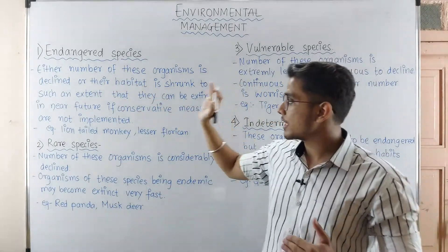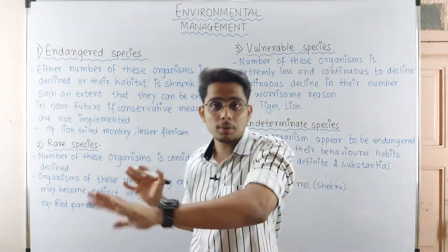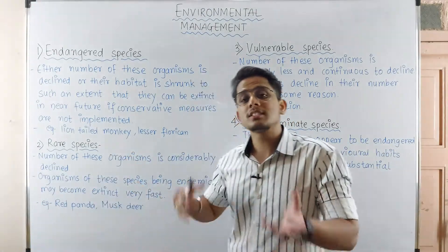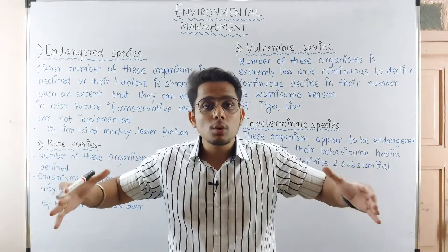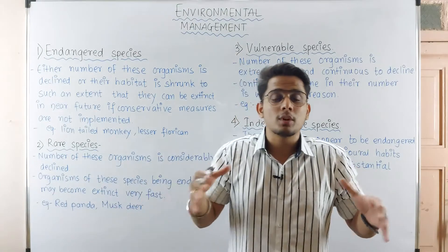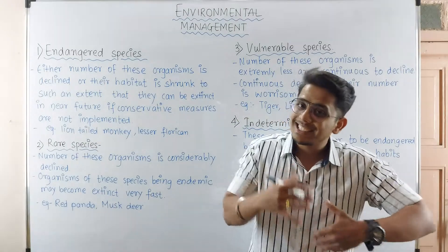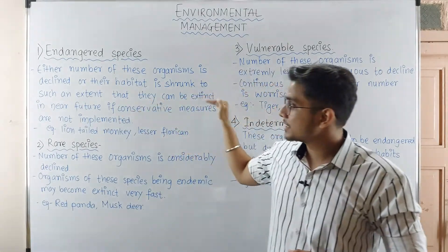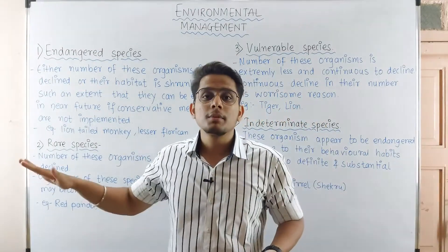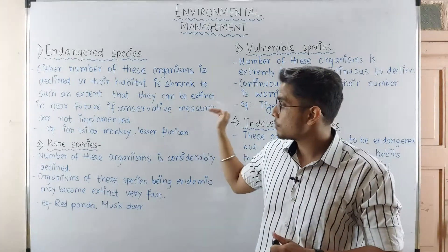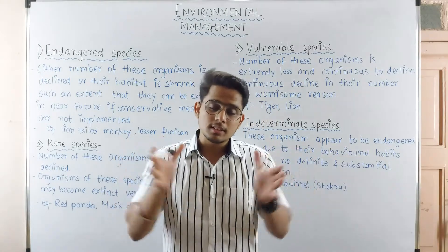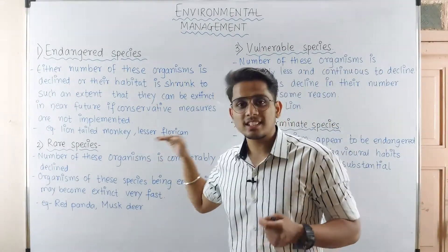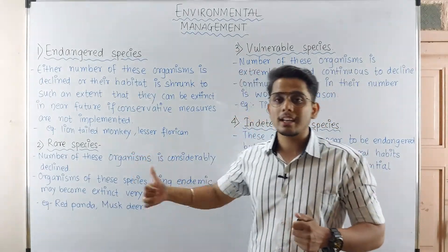Or their habitat is shrunk. Habitat means the surroundings of those particular animals — the environment where they live. Just as a person needs space to live, if the living space decreases, it becomes difficult. Similarly, if animals' habitat shrinks, their numbers decline. They can become extinct in the near future if conservation measures are not implemented. Examples of endangered species are the lion-tailed monkey and lesser florican, which is a bird.